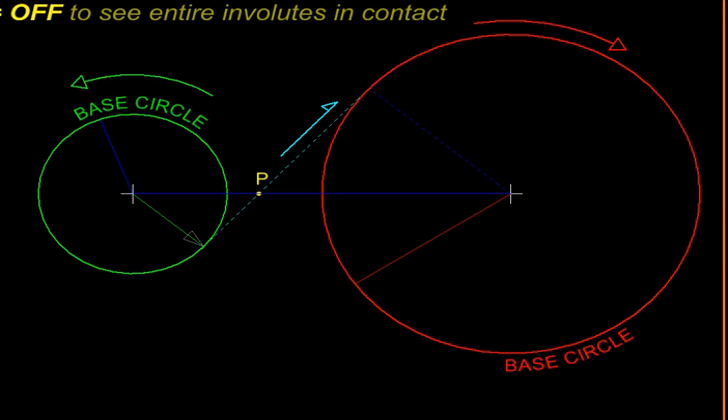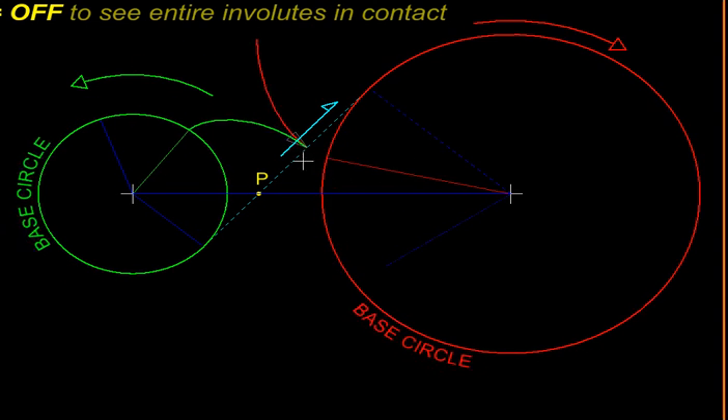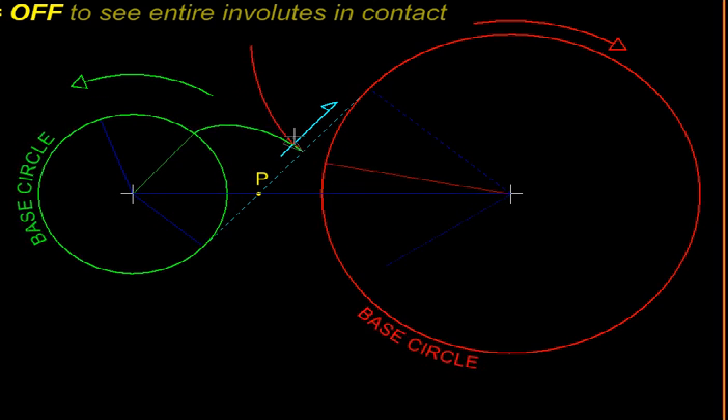And these two involutes will always make contact. So this is how it looks: there is a green involute on the green pulley, and the red one is getting traced on the red one, and they are always making contact. A direct push is applied, thereby the motion is transferred, so there is no chance of slip. We are not only getting a constant velocity ratio, but we are also getting a positive drive—the best of both worlds.